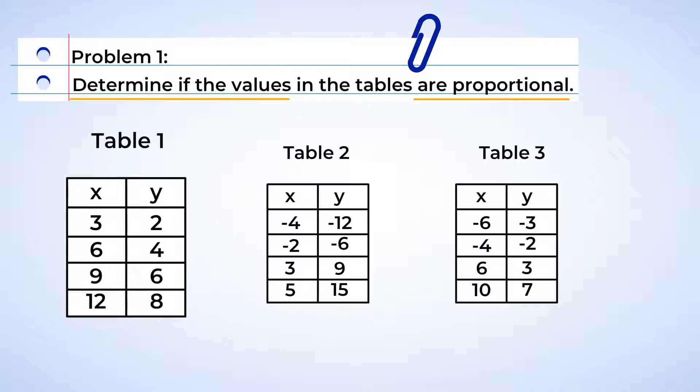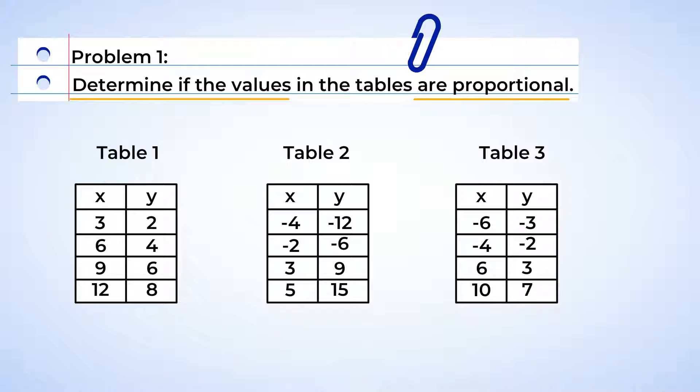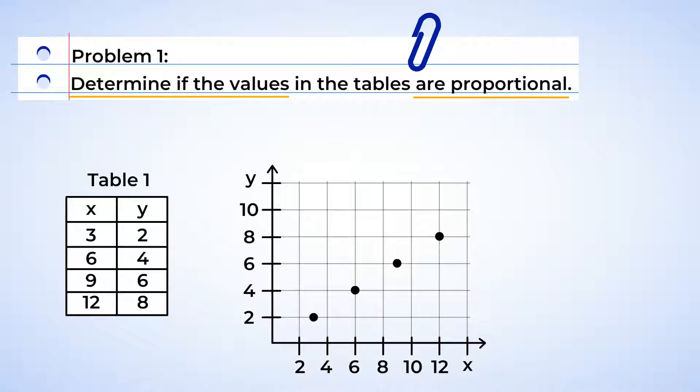We can take the values from table 1 and graph them out to see visually if they are in a proportional relationship. There we go. For quantities to have a proportional relationship, there are two requirements. First, the values have to form a straight line when they are graphed. Let's look at our points. They are in a straight line. Neat!